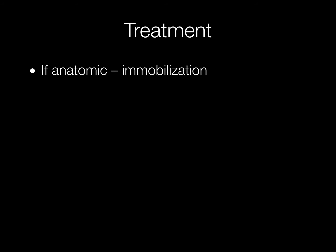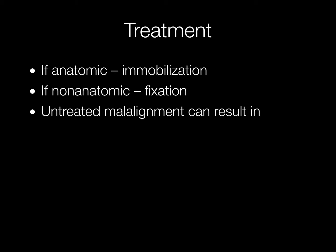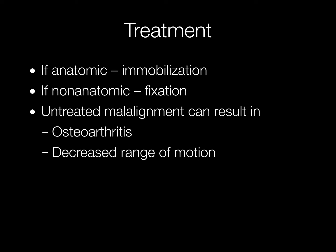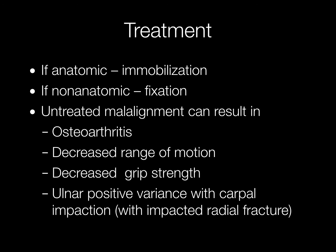Here's an oversimplification of treatment: if it's anatomic, immobilization; if it's non-anatomic, surgical fixation. Untreated malalignment is known to result in osteoarthritis, decreased range of motion, decreased grip strength, and ulnar positive variants with carpal impaction — that is, with an impacted radial fracture.